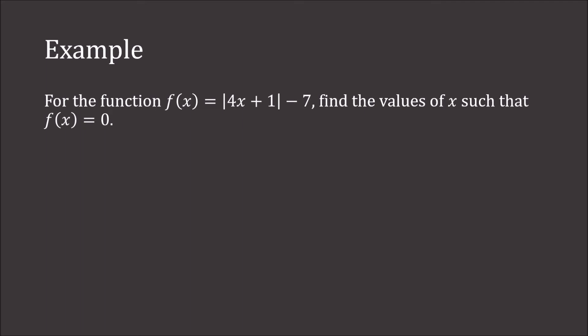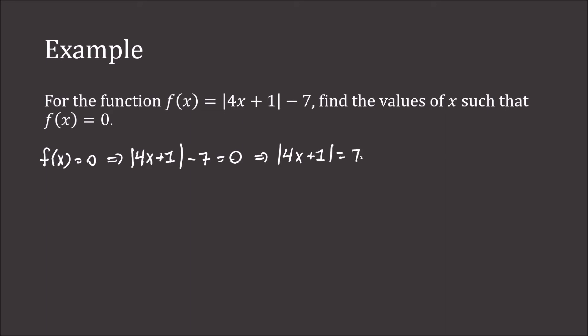For the function f of x equals the absolute value of 4x plus 1 minus 7, we wish to find the values of x such that f of x is 0. So if f of x equals 0, that would imply that the absolute value of 4x plus 1 minus 7 has to equal 0. By adding 7 to both sides, we get that the absolute value of 4x plus 1 has to equal positive 7. Now, remember that the absolute value of 4x plus 1 means either 4x plus 1 is negative 7 or 4x plus 1 is positive 7.